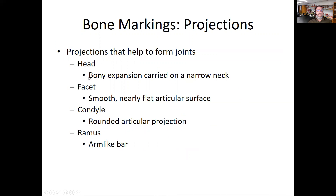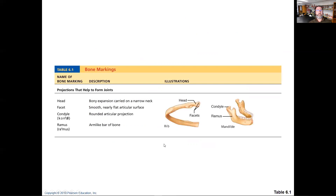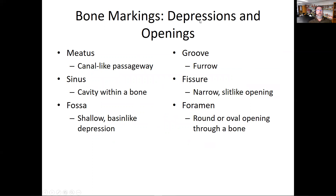Other projections include heads, like the femoral head, facets — flattened surfaces where bones slide over each other — condyles, which are rounded articular projections at the end of the femur to interact with the tibia, and a ramus, which is an arm-like bar, like on the mandible. Good images and reinforcement of these are available in the book and through the Pearson content for self-testing.